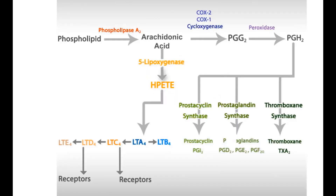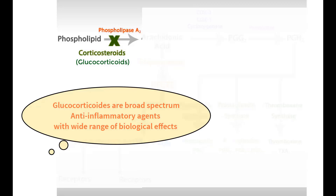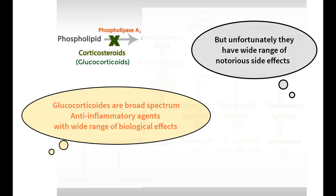Starting from the early step in the eicosanoid production pathway, corticosteroids — specifically the glucocorticoids — interfere with the phospholipase A2 enzyme, therefore interfering with the production of almost all types of inflammatory eicosanoids. Indeed, glucocorticoids are a broad spectrum of anti-inflammatory agents with a wide range of biological effects, but unfortunately they also have a wide range of notorious side effects.